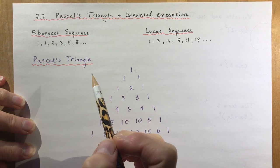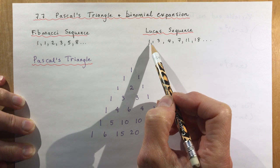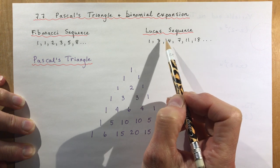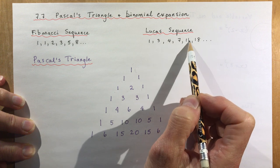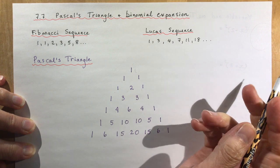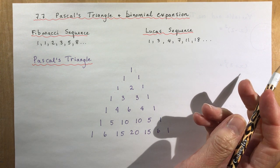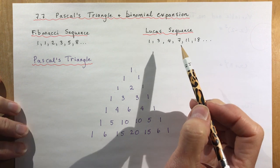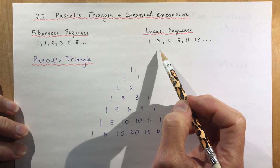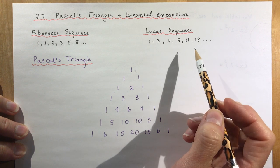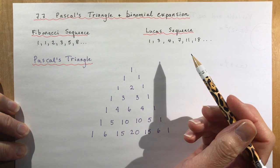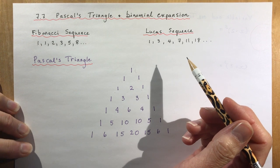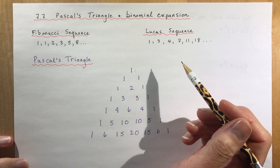Good old Fibonacci. Lucas decided to start with 1 and 3 and start adding them together: 1 and 3 is 4, 3 and 4 is 7, 4 and 7 is 11. So nothing very special — you could make up your own sequence. What if you started with 1 and 5 and added the numbers together? It's okay, but it's not as fantastic and magical and important as Pascal's triangle.